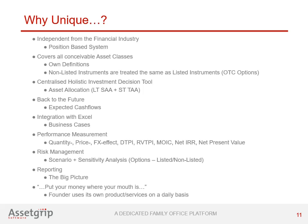Faced with a choice of whether highest priority should be given to risk management or return management, most family offices will opt for risk management. Through scenario and sensitivity analysis — in which derivative positions are taken into account — AssetGrip's functionality provides an important decision tool. With its consolidated big picture report, AssetGrip claims to be unique because it instantly reflects the proposed investment strategy. The founder of AssetGrip, being himself the most demanding user, uses the software on a daily basis — a quite unique situation leading to continuous focus on quality, user-friendliness and service.